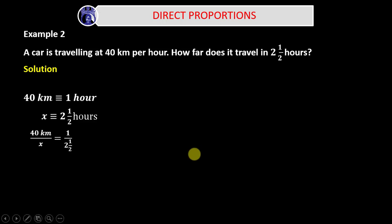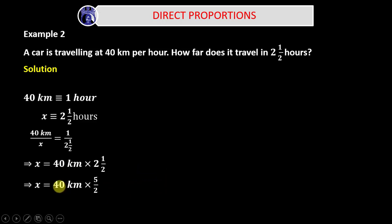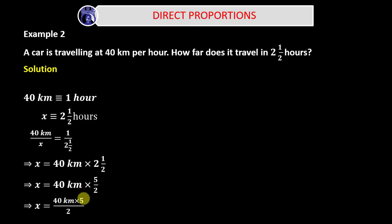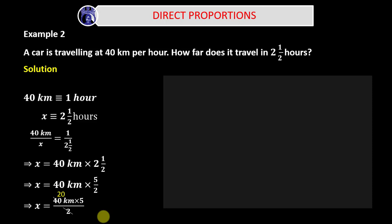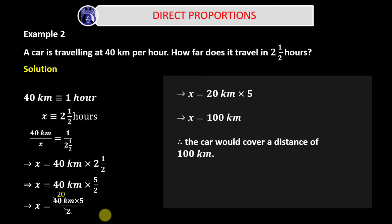We now cross-multiply: X times 1 gives us X, and 40 kilometers times 2½. When we simplify, X equals 40 kilometers times 5 over 2 — converting 2½ to an improper fraction. That simplifies to 40 divided by 2 equals 20, so X equals 20 kilometers times 5, giving us X equals 100 kilometers. Therefore, the car would cover a distance of 100 kilometers in 2½ hours.